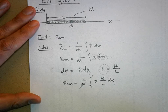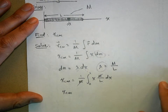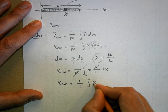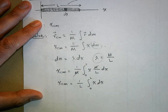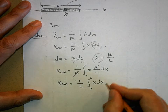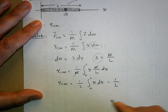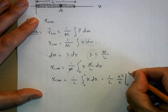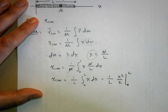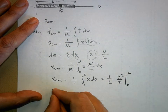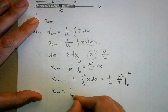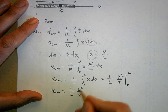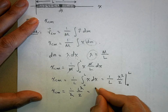Cleaning up: x_cm = (1/L) * integral from 0 to L of x dx = (1/L) * [x²/2] from 0 to L = (1/L) * (L²/2). The L cancels with L² and we get x_cm = L/2 — the obvious answer. It took about six lines of math to confirm what we already knew.